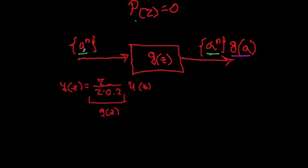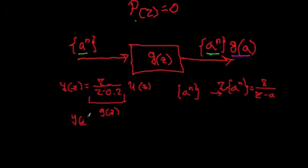And we apply input sequence A(n). So, A(n) sequence. We know when we take a Z transform of the A(n), that this is going to be z over z minus a.